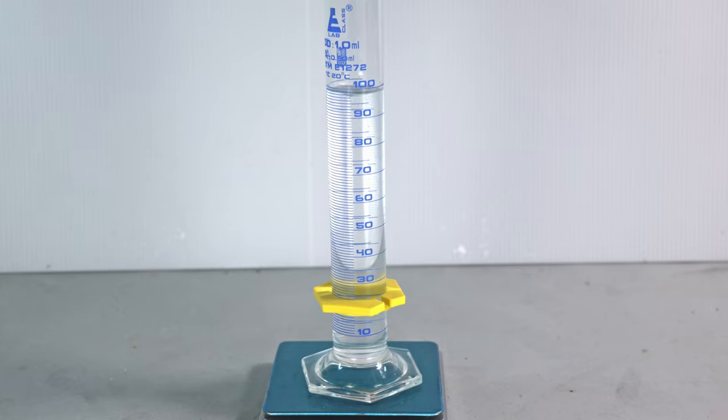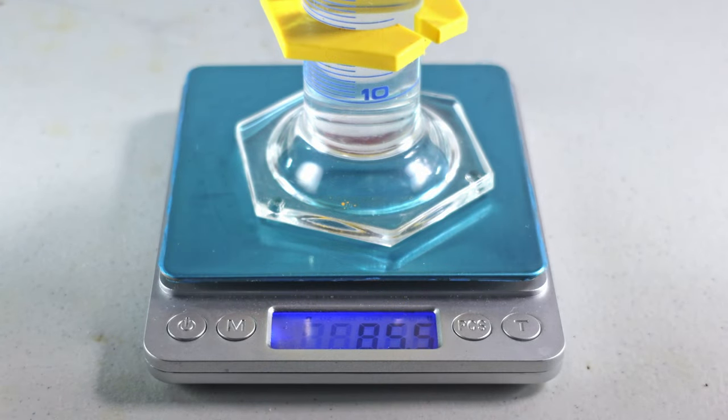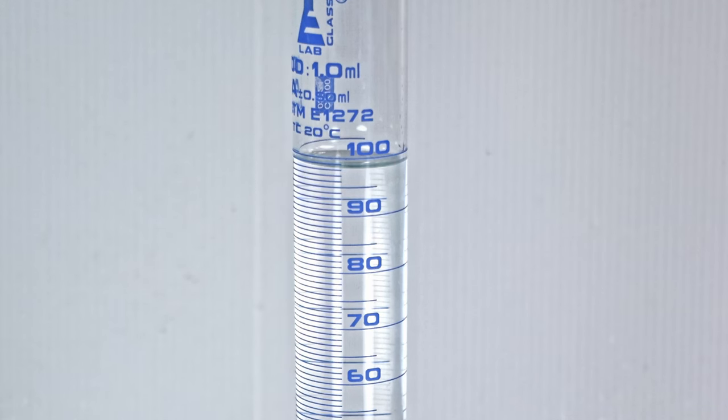As you can see, we're just shy of 100 milliliters. We have 85.5 grams of isopropyl chloride.